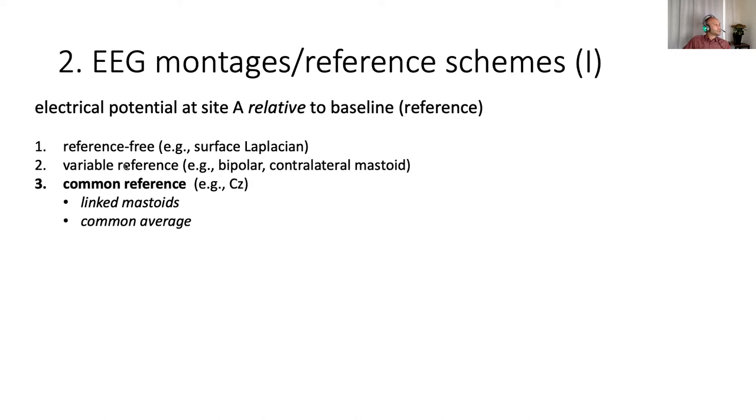Coming to a true reference scheme, there's a category of a variable reference. Here the idea is that you use different references for different electrodes. The most extreme one is maybe the bipolar reference. Here you relate every electrode to the immediately adjacent one, and that's also a way to highlight local activity. Another big one is the contralateral mastoid, which is primarily used for sleep scoring, where you reference half of the scalp to the mastoid on the other side and vice versa. And the final category is the common reference, which means you have a single baseline for all your channels.